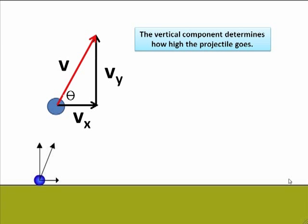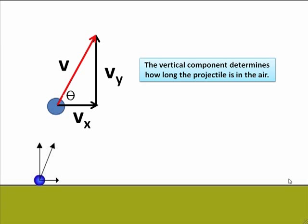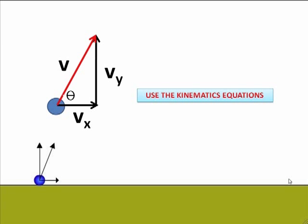And the vertical component determines how high the projectile goes. And the vertical component will be used to find out how long the projectile is in the air. And we use this Vy in all of the kinematics equations as V-initial.